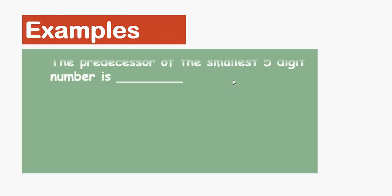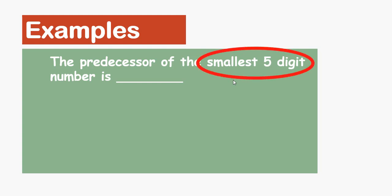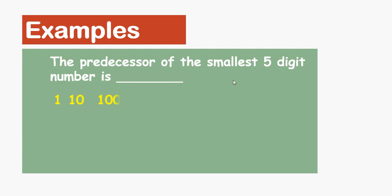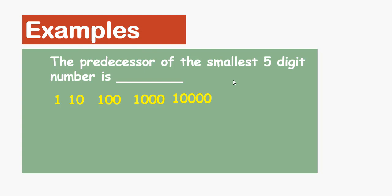The last example: the predecessor of the smallest 5-digit number is dash. First we need to know which is the smallest 5-digit number. The smallest 1-digit number is 1, the smallest 2-digit number is 10, the smallest 3-digit number is 100, the smallest 4-digit number is 1000, so the smallest 5-digit number is 10,000. Here the keyword is predecessor, so we subtract one from 10,000 and get 9999, which is the predecessor of the smallest 5-digit number.